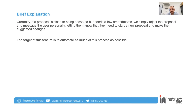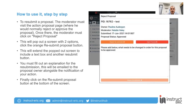So how does it work? Essentially, as a moderator, we usually have two options, which is either reject or approve the proposal. We've added a sort of sub-option of rejection, which is resubmission. So firstly, we need to click on the reject proposal button, which brings up this modal, which has a resubmission option.